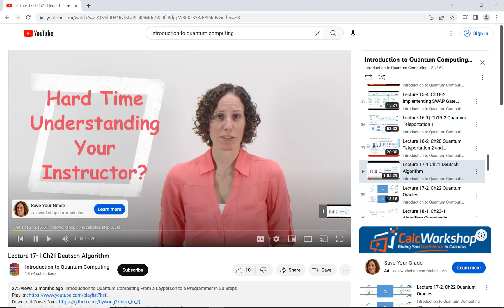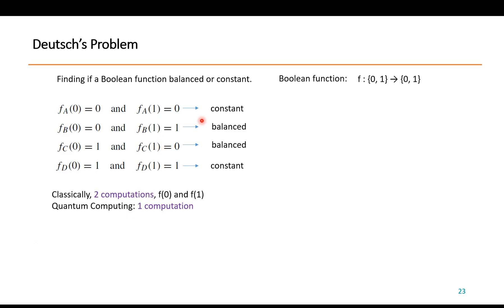Now let's go back to the PowerPoint. What is the Deutsch problem? In short, we have a function — we don't know what it is — it is a boolean function, meaning the input is 0 or 1 and it gives output 0 or 1. If it gives a constant output for all inputs, it is called constant. If one input gives 0 and the other gives 1, we call it balanced.